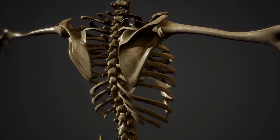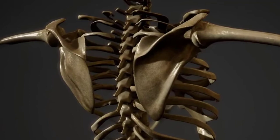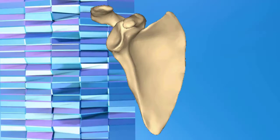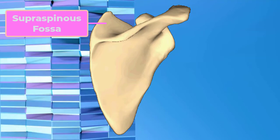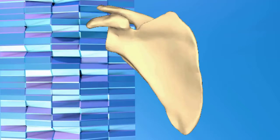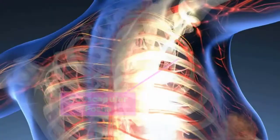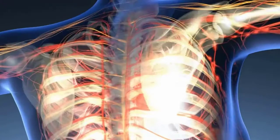The scapula has three depressions, each of which is called a fossa. Two of these are found on the posterior scapula above and below the scapular spine. Superior to the spine is the narrow supraspinous fossa, and inferior to the spine is the broad infraspinous fossa. The deep anterior surface of the scapula forms the broad subscapular fossa. All of these fossae provide large surface areas for the attachment of muscles that cross the shoulder joint and act on the humerus.